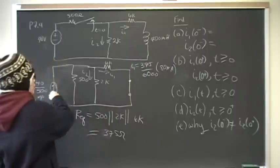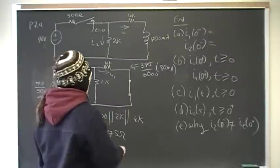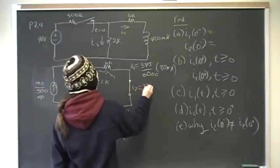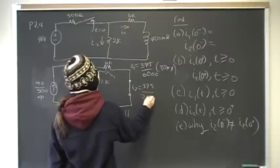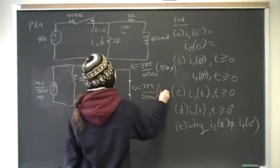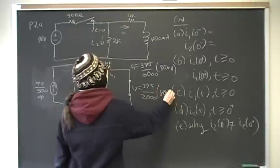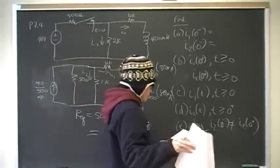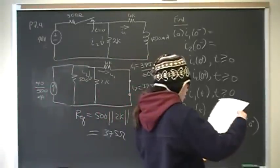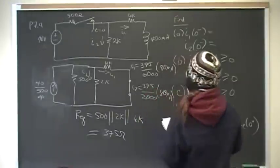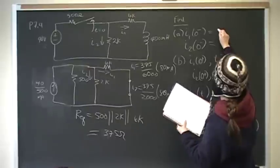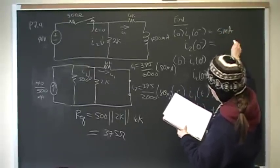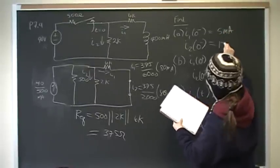My current here is 80 milliamps. I2 would be 375 divided by 2,000 times 80 milliamps. Those values work out to: I1 equals 5 milliamps, and I2 equals 15 milliamps.